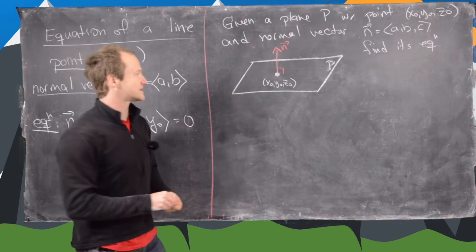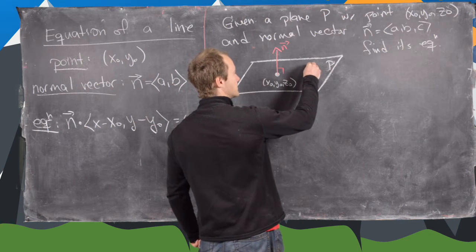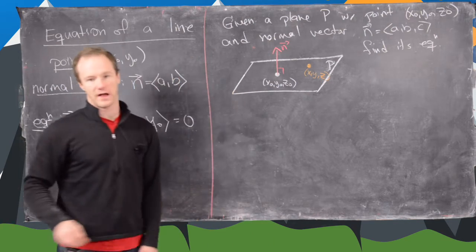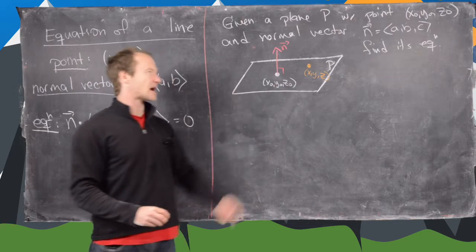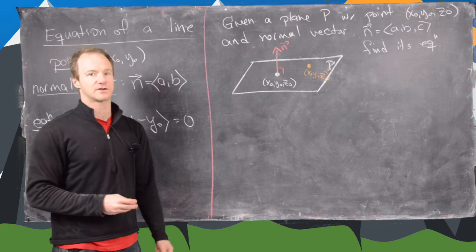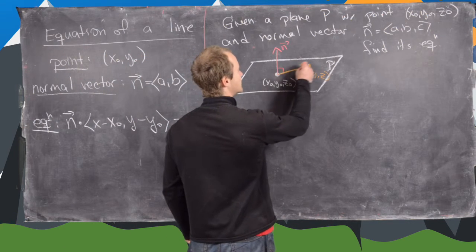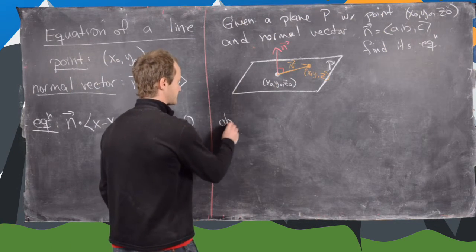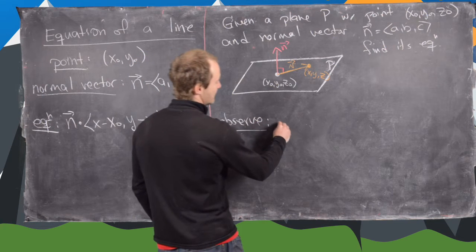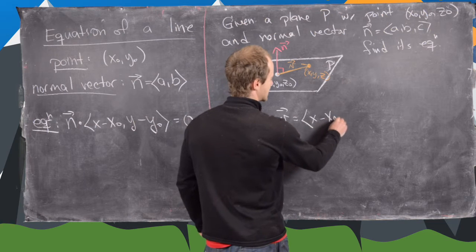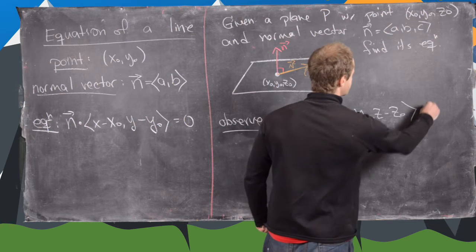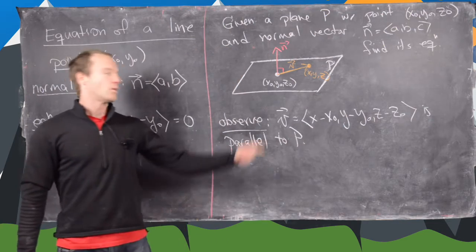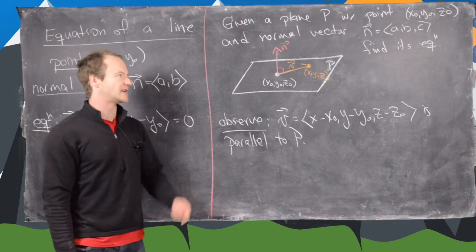The next thing we want to do is take an arbitrary point on the plane and find an equation for it. So let's say this is the arbitrary point x, y, z on the plane. We can use that arbitrary point and our given point to construct a new vector that is parallel to the plane. The vector v, given by x minus x-naught, y minus y-naught, z minus z-naught, is parallel to the plane P, because we get it from connecting two points that are on the plane.